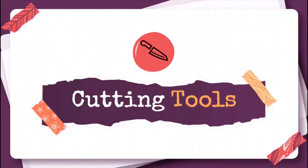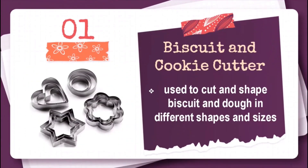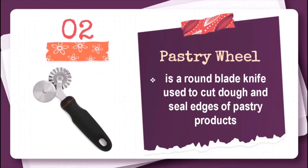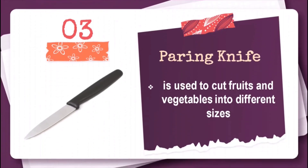Cutting tools. Biscuit and cookie cutter are used to cut and shape biscuit and dough in different shapes and sizes. Pastry wheel is a round blade knife used to cut dough and seal edges of pastry products. Paring knife is used to cut fruits and vegetables into different sizes.